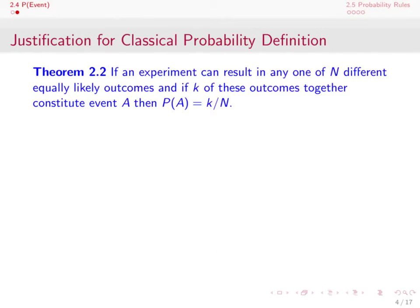Next we return to the classical definition of probability, stated as theorem 2.2, to show it's consistent with our axioms. If an experiment can result in any one of n different equally likely outcomes, and if k of those outcomes together constitute event A, then the probability of A is equal to k over n.